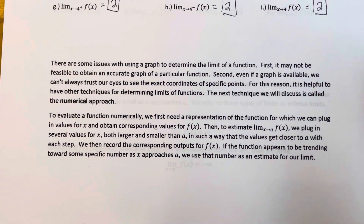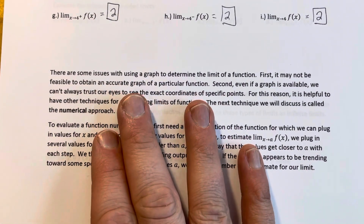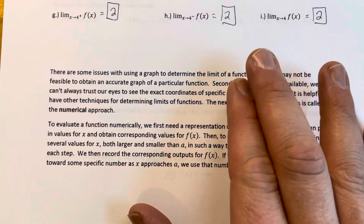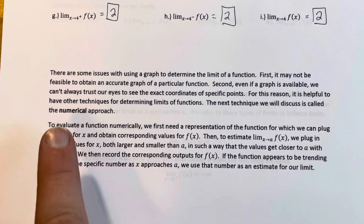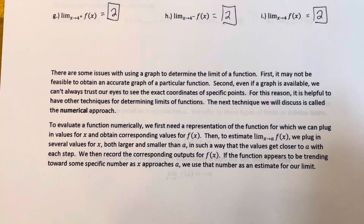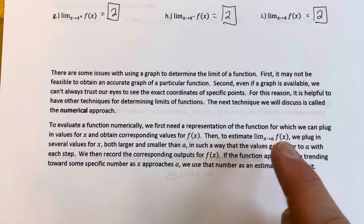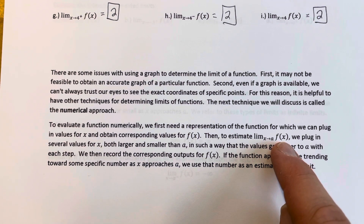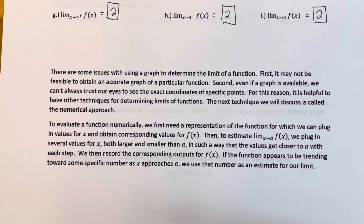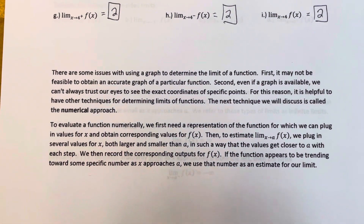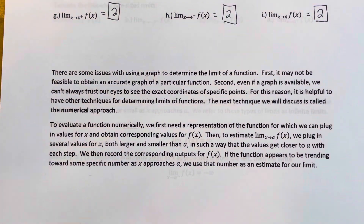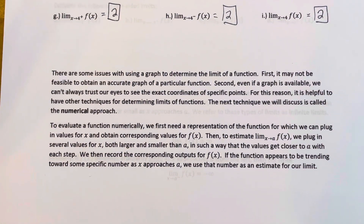The next approach is called the numerical approach. If we're trying to evaluate the limit as x approaches a of some function f of x, we plug in values that are very close to a — both from the left and from the right — put those numbers into a table, and look for a pattern to see if they appear to be approaching something specific. Once we've done that, we can make a good estimate of what the limit equals. In the next video, we'll look at an example of how to do that.